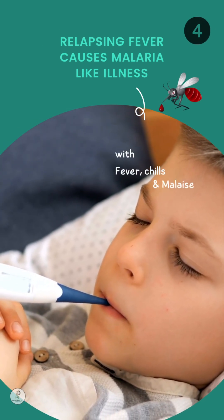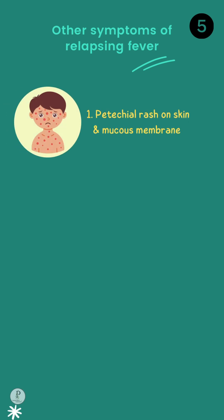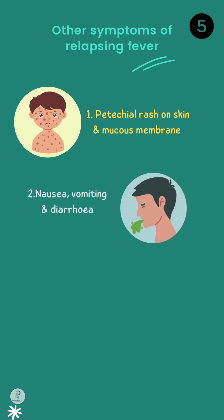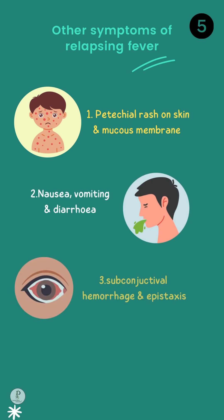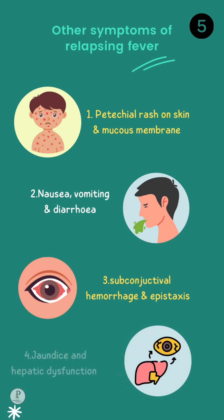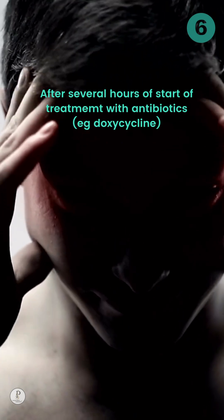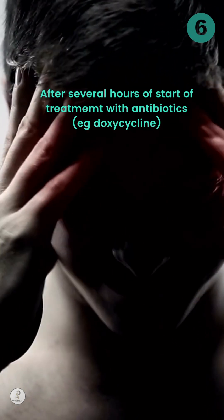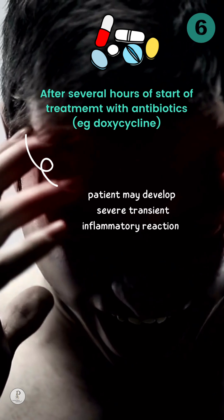Other symptoms of relapsing fever include petechial rash on the skin and mucous membranes, nausea, vomiting, and diarrhea, subconjunctival hemorrhage, epistaxis, jaundice, and hepatic dysfunction. After several hours of starting antibiotic treatment with doxycycline, a severe inflammatory reaction may occur.